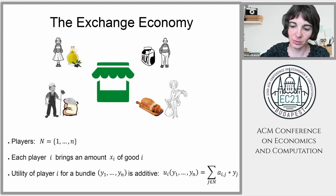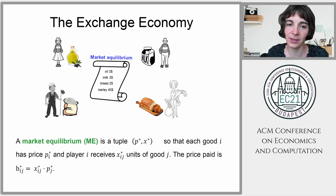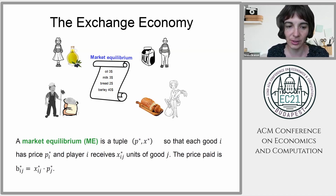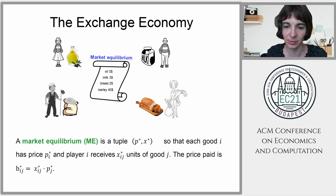We're interested in finding outcomes known as market equilibria, where supply equals demand and trade takes place optimally. These are given by a tuple of prices and allocations.